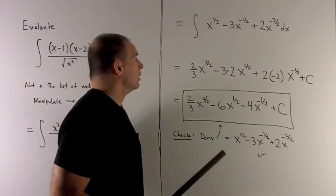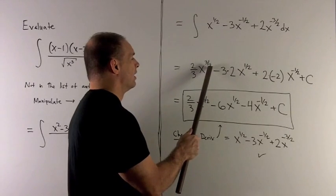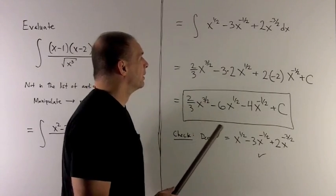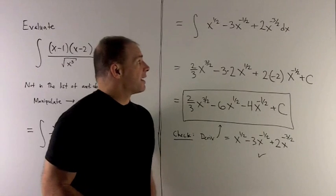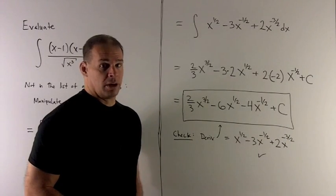So let's see what we get. In the first one, we add 1 to 1 half, gives me 3 halves. I flip that over to get 2 thirds. For minus 1 half, I add 1 to that. That gives me 1 half. I flip it over. That gives me 2.